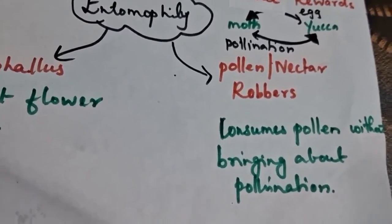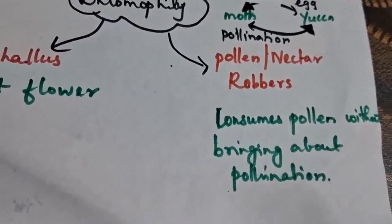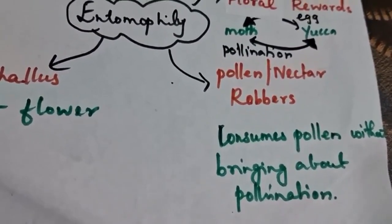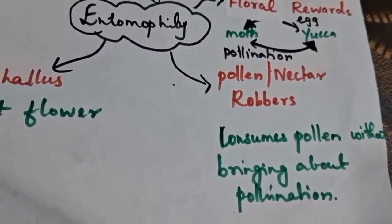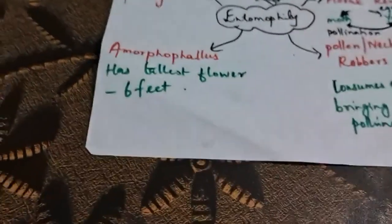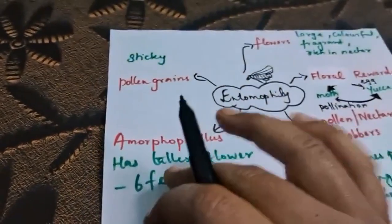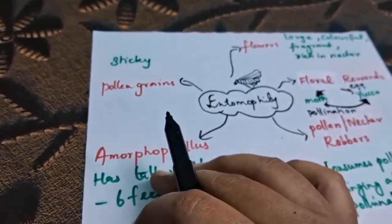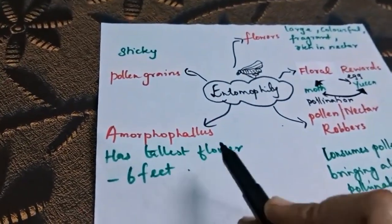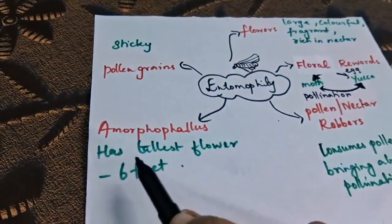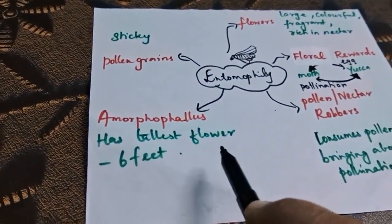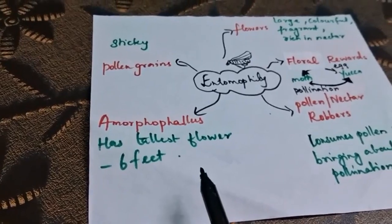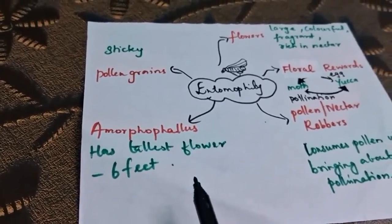Next are nectar robbers. Moving to pollen grains - the pollen grains should be very sticky in nature. Amorphophallus is the tallest flower with a height of 6 feet. These are all the key points on entomophily.